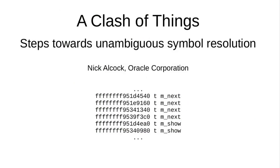The problem I'm trying to solve is visible here. If you look at /proc/kallsyms and sort it by name, there are a lot of duplicates. Symbols in the kernel are not unique — they're not even unique in the core kernel, but certainly when you add built-in modules they're not unique at all.